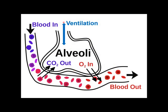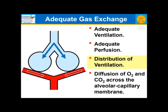The alveolus is where gas exchange occurs. Oxygen comes in by ventilation and diffuses across the alveolar capillary membrane into the blood. Conversely, CO2 comes from the body through the blood and diffuses out into the alveolus where it's ventilated out. You need adequate ventilation, adequate perfusion, ability of O2 and CO2 to diffuse across the alveolar capillary membrane, and distribution of ventilation for adequate gas exchange. The most important of these is distribution of ventilation, at least clinically.